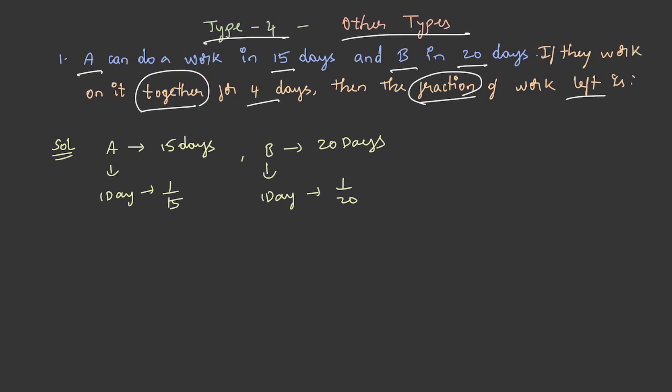In the second statement it is given that if they work on it together, that is A plus B, one day work will be equal to 1 by 15 plus 1 by 20, and this will be equal to 7 by 60. This is the part of the work done together in one day. And what about four days? It is 7 by 60 into 4, which is equal to 7 by 15.